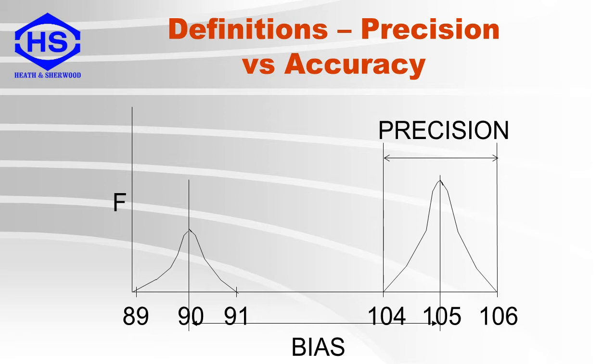Here we show the difference between precision and accuracy. The precision at both sides is the same, plus or minus one. However, one set of results is biased by 15.